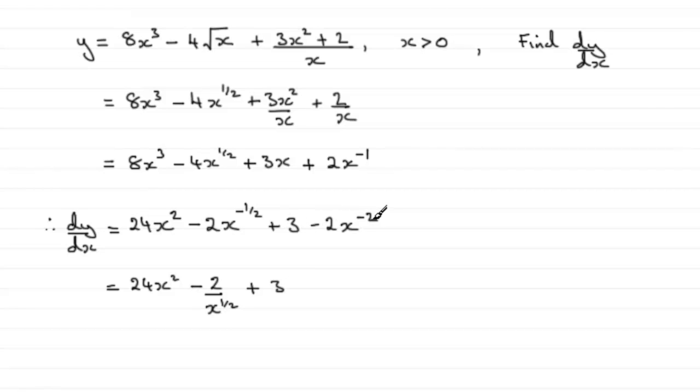Then we've just got the 3. When it comes to minus 2x to the minus 2, think of x to the minus 2 as 1 over x squared. And if you multiply it by the minus 2, you get minus 2 over x squared. So there's an alternative form then for this particular result.